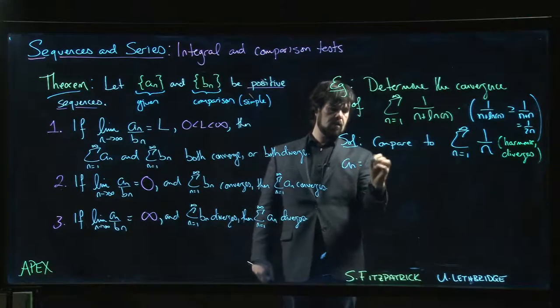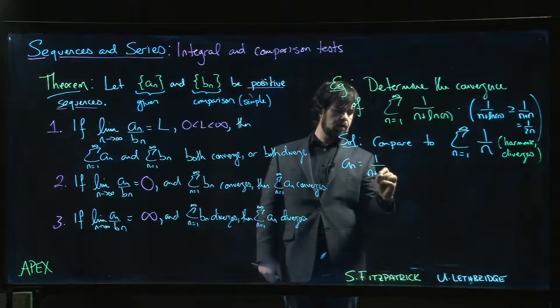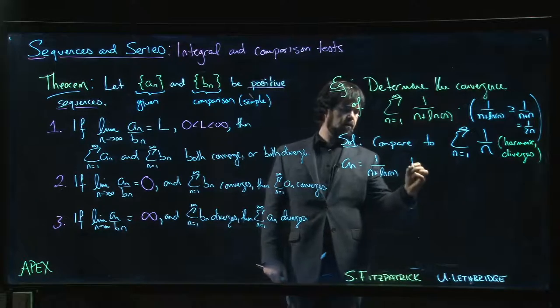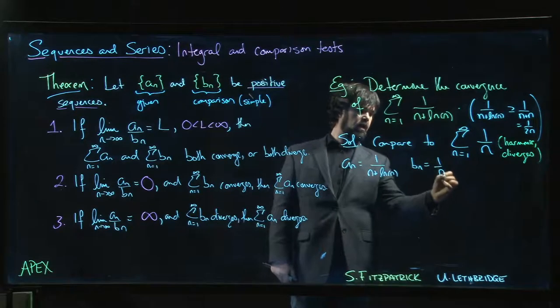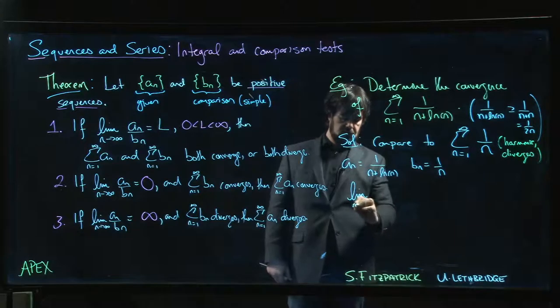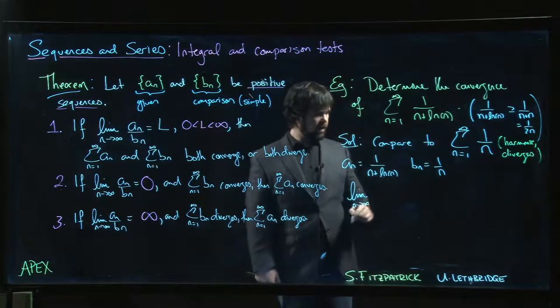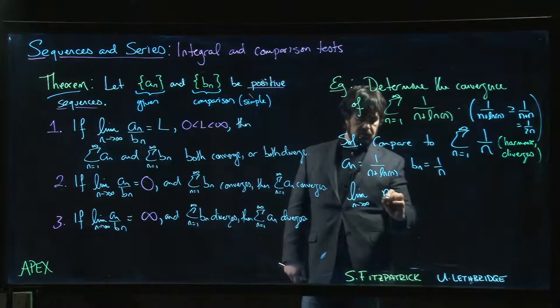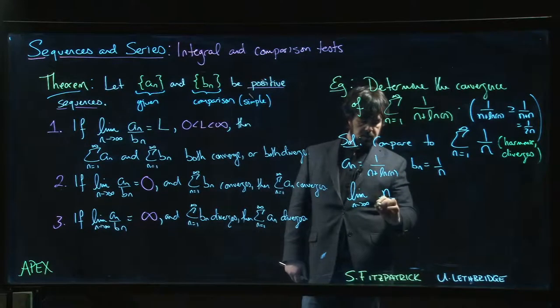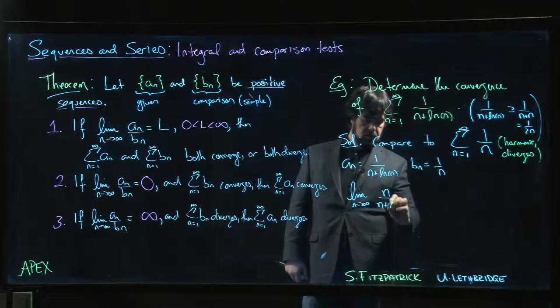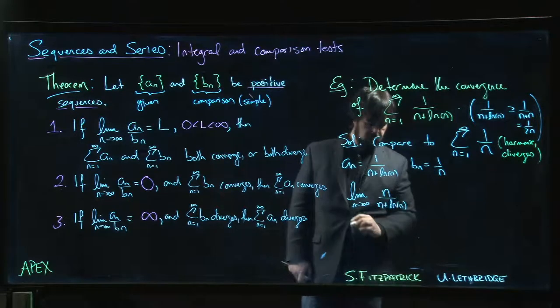So an is 1 over n plus log n. bn is 1 over n. So our limit looks like this. Limit as n goes to infinity. Again, dividing by 1 over n is like multiplying by n. n over n plus the natural log of n.